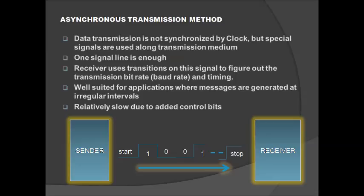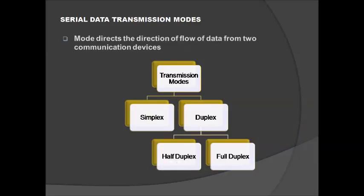Asynchronous transmission is well suited for applications where messages are generated at irregular intervals. It is relatively slow due to added control bits. With asynchronous transmission, signal timing is not required — signals are sent in an agreed pattern of bits, and if both ends agree on the pattern, communication can take place. The data is framed by a start bit (usually binary zero), followed by the data byte, and stop bits are added at the end.